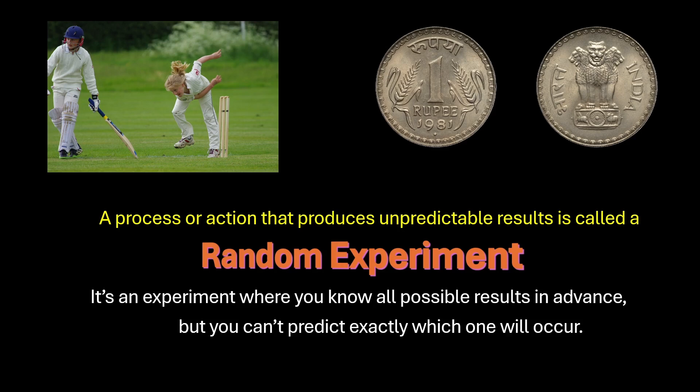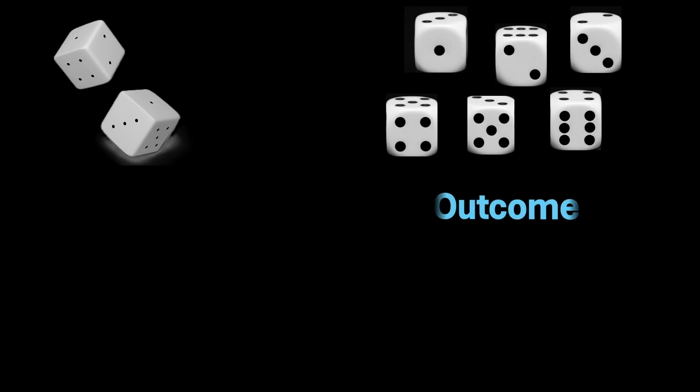Let's take one more example. Let's say you roll a die. Once you roll one die, you will get 1, 2, 3, 4, 5 or 6 as a result. These results are called outcomes. An outcome is simply the result of an action or experiment.